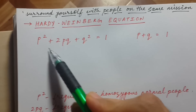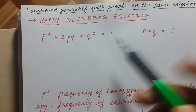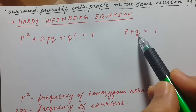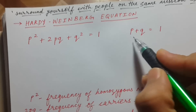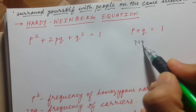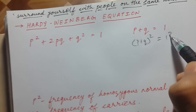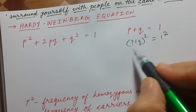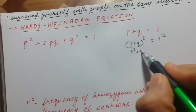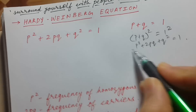Now let's try to understand how this formula is derived. Always remember that p + q = 1. From this we can say that (p + q)² = 1², and (p + q)² expands to p² + 2pq + q², which equals 1. So this is how this formula is derived.